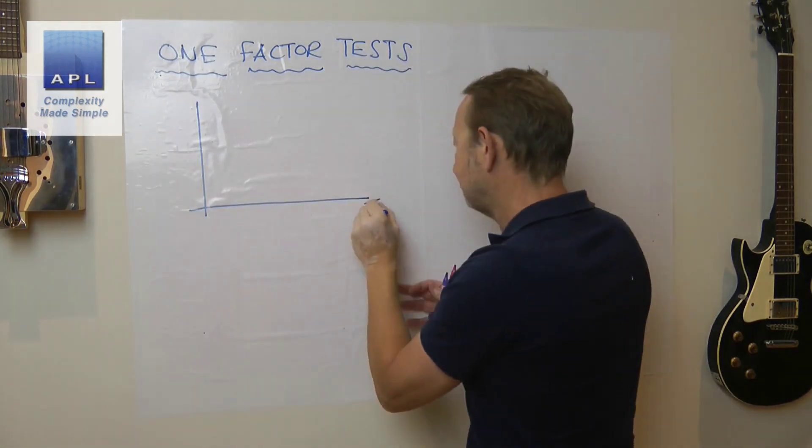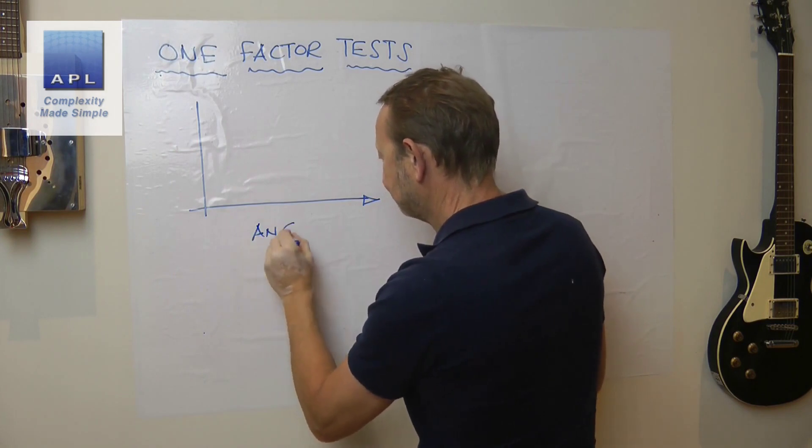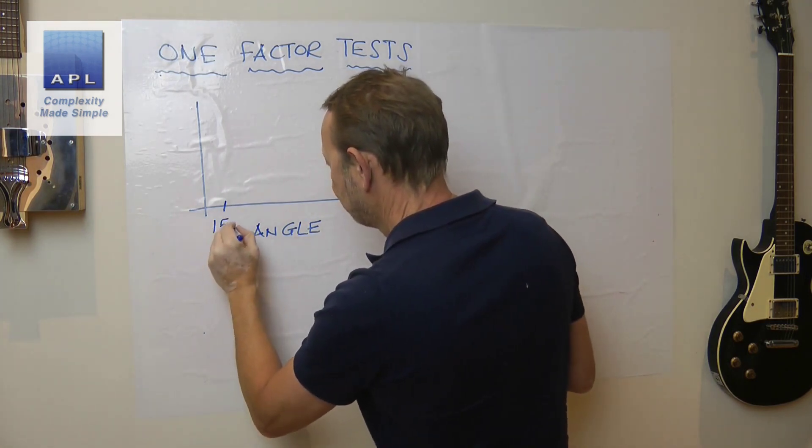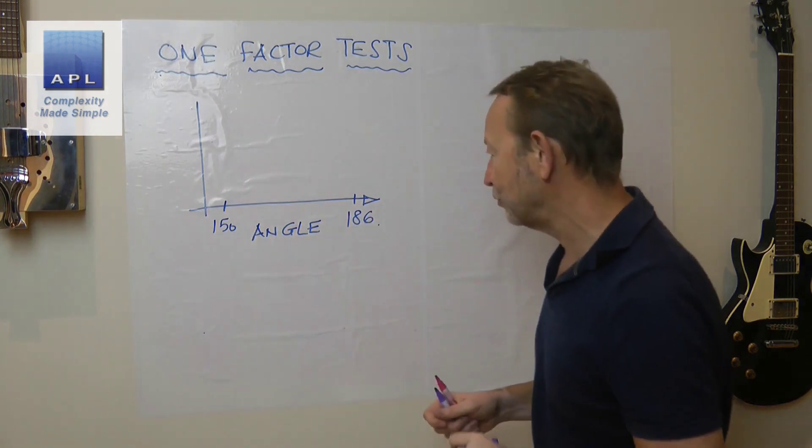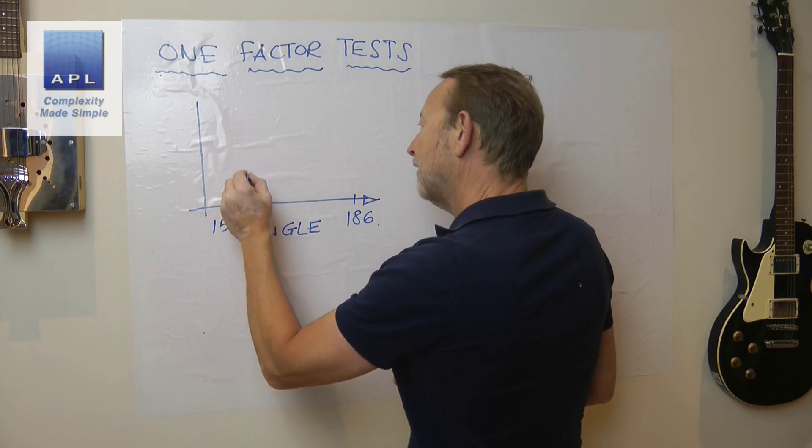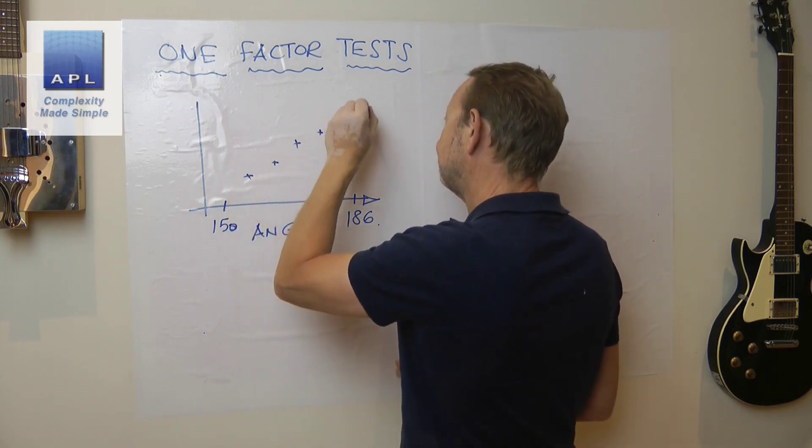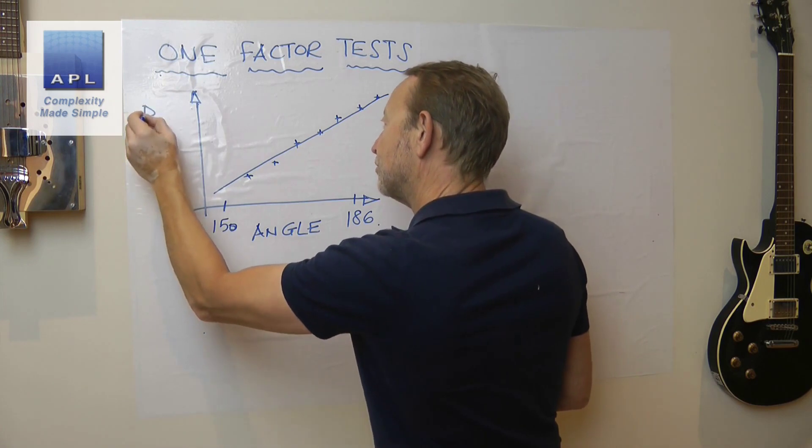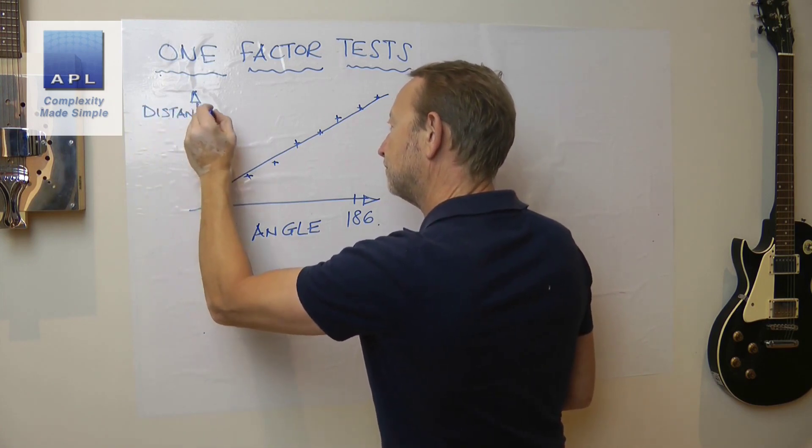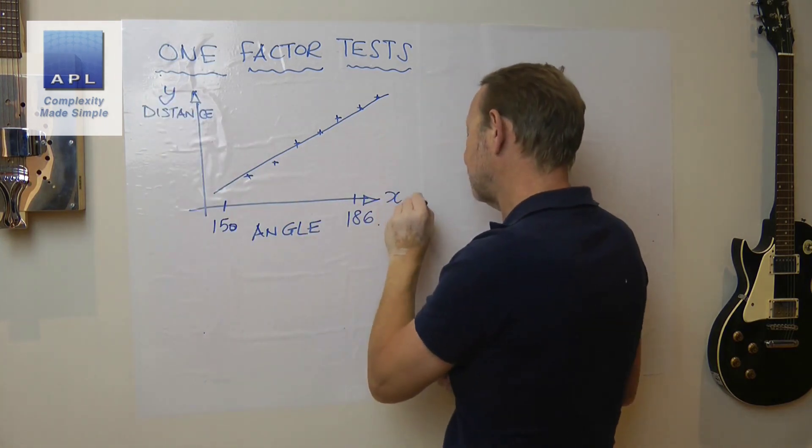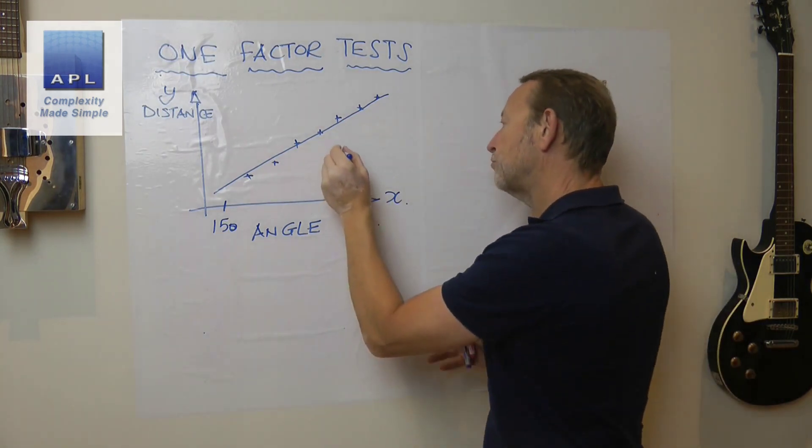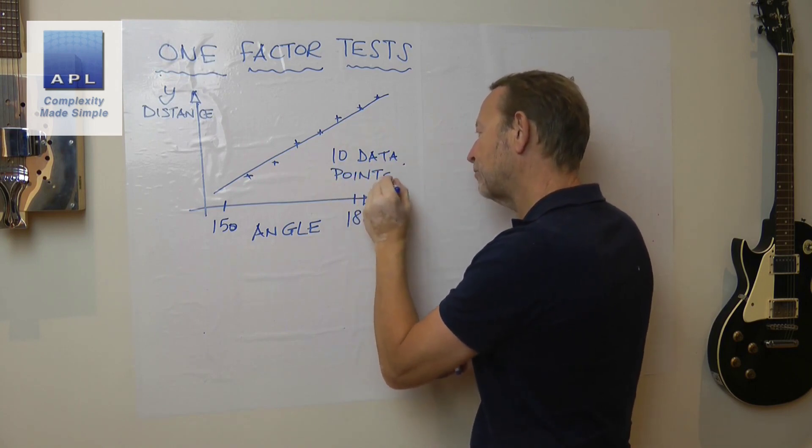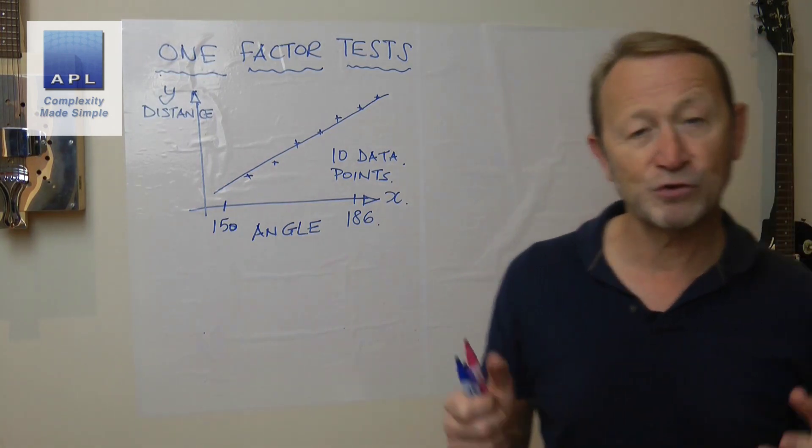Then what I get them to do is plot a scatter diagram. So we get angle across the bottom - they're going somewhere between about 150 and full scale deflection at 186 degrees. So they do various tests at different angles. This is distance. So this is the y, this is the x. I usually get them to do 10 data points. Then out of this analysis comes an equation.